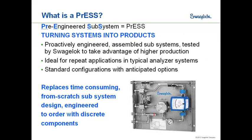What we're trying to do with the PRESS methodology is turn systems or subsystems into products. That means we want to proactively engineer, assemble, and test these subsystems to take advantage of producing them in higher production volumes, so we can bring them to market at a more cost-effective and higher quality rate. It's really ideal for repeat applications in typical online process analyzer systems. These are standard configurations, with engineered options to help meet a wide range of customer applications.